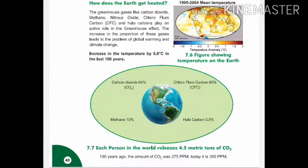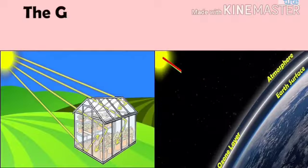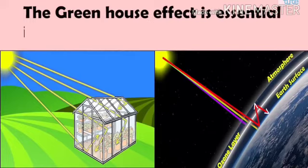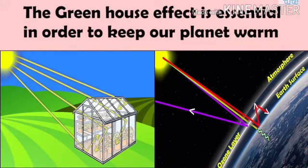How does the earth get heated? Gases like carbon dioxide, nitrous oxide, chlorofluorocarbon, and halocarbon play an active role in the greenhouse effect. The increased proportion of these gases is dangerous and can lead to the problem of global warming.